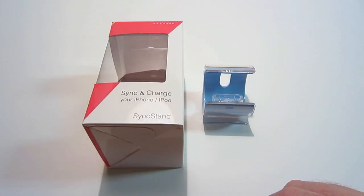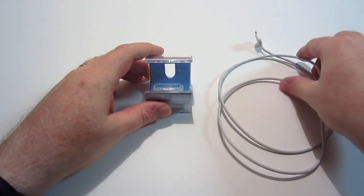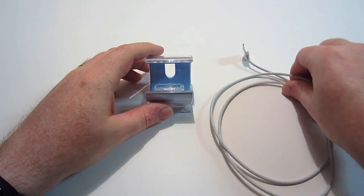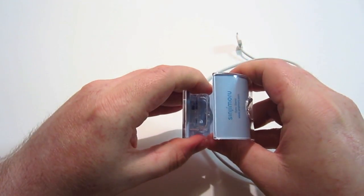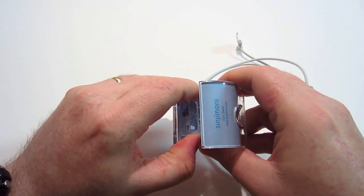You can simply insert your USB sync cable into the base and you can sync and charge your iOS device. Basically what you're going to want to do is take your sync cable that you have with your device and insert it into the stand. This little part unlocks.